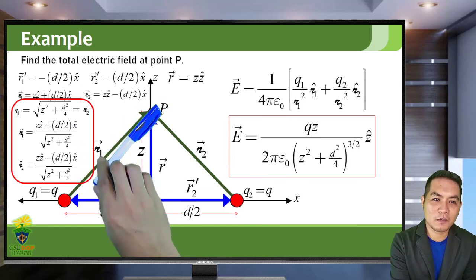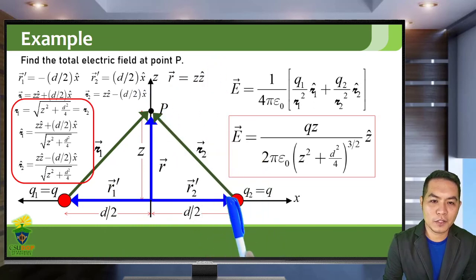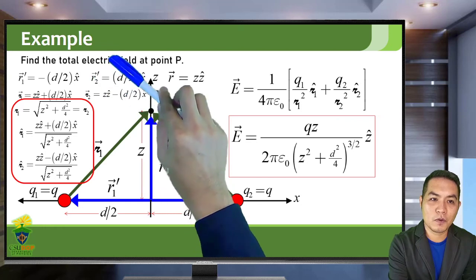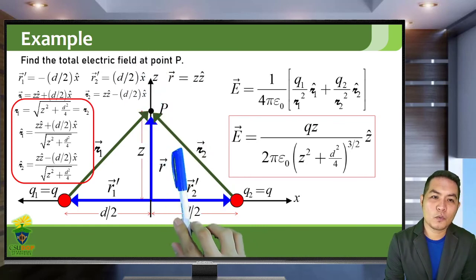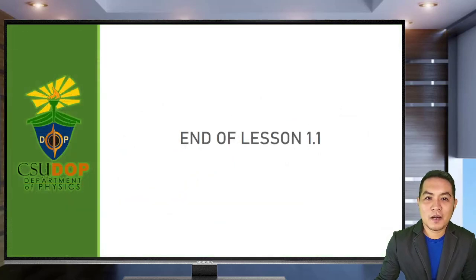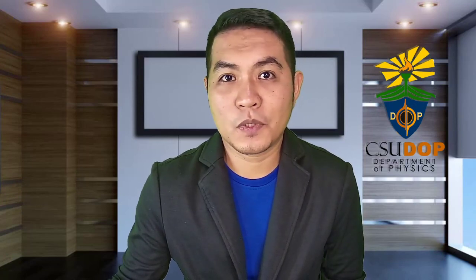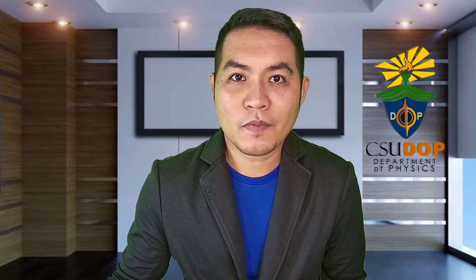The final electric field is only along the Z axis. You will notice that the electric field due to Q1 is along quadrant 1 and the electric field due to Q2 is along quadrant 2 — both X components cancel each other out, and the remaining component is only the Z component. That concludes our lesson on Coulomb's Law for Discrete Charge Distribution. Our next lesson will continue with Coulomb's Law for continuous charge distributions. Thank you for listening, and I will see you in the next lesson.